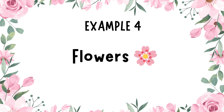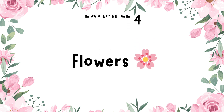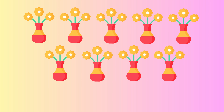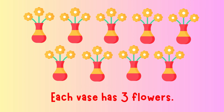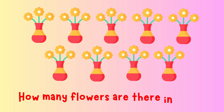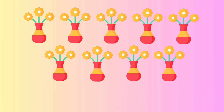Example four: Flowers. Let's try another one. There are nine vases. Each vase has three flowers. How many flowers are there in total? That's nine times three equals twenty-seven. There are twenty-seven flowers all together.